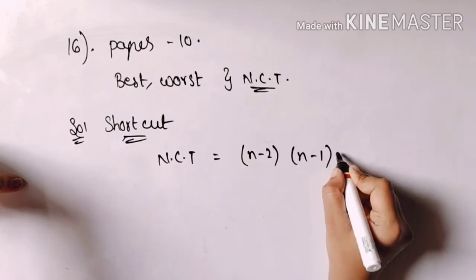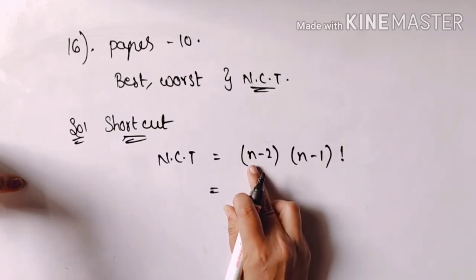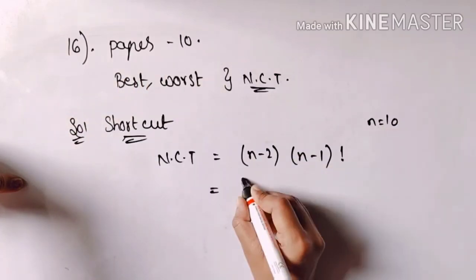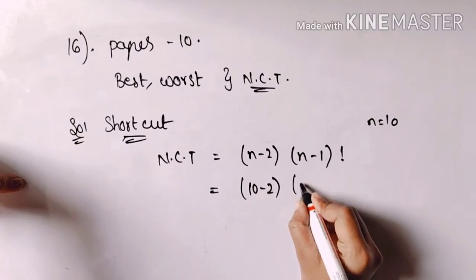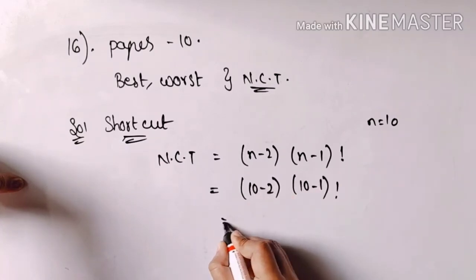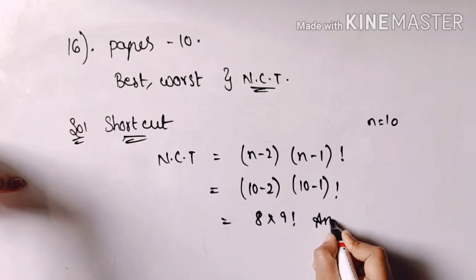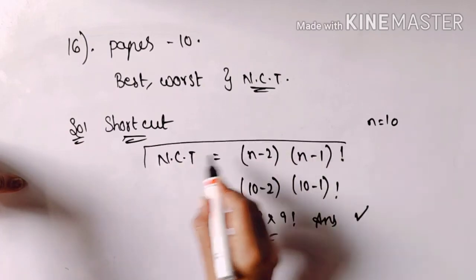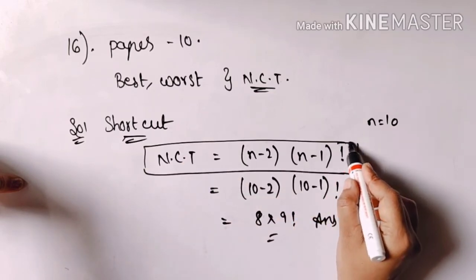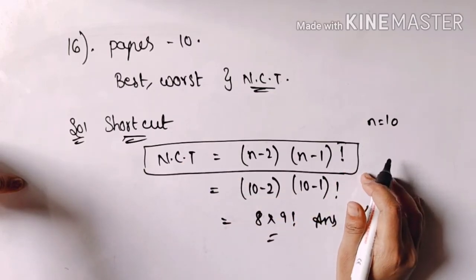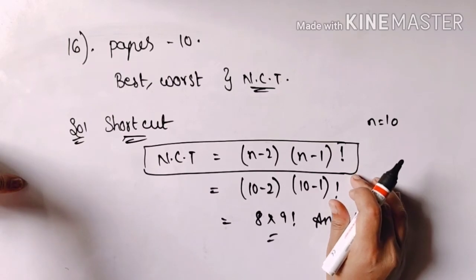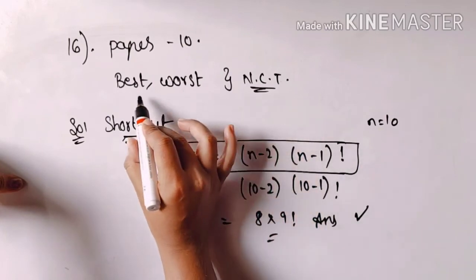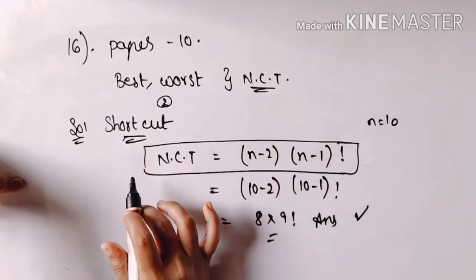So we have 10 papers in place. The answer is 10 minus 2 and 10 minus 1 factorial, which is 8 into 9 factorial. This is the correct answer. The shortcut for 'never come together' is: n minus 2 into n minus 1 factorial. But there are restrictions on using this formula. The restriction is: 'never come together' applies only to two items.